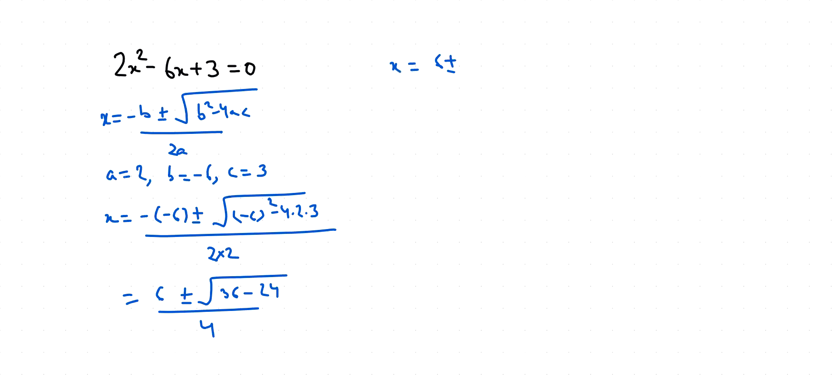X equals 6 ± 2√3 / 4. From the numerator if I take 2 as common, 3 ± √3 by 4. This will cancel out 2, so x equals (3 ± √3) / 2.